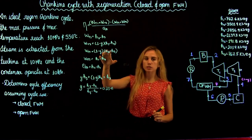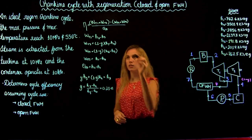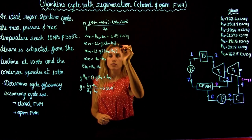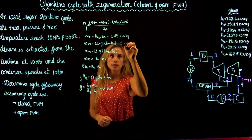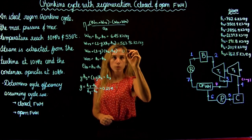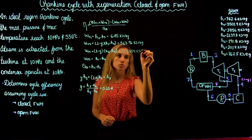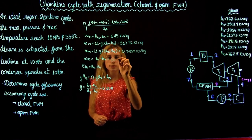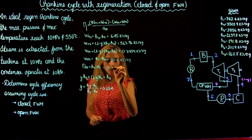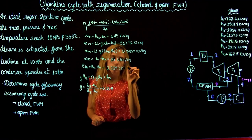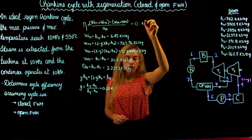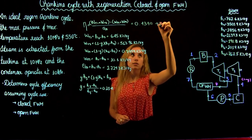Now we're ready to plug in the numbers to find the cycle efficiency. For the first turbine the work is 645 kJ/kg. For the second turbine it is 563.96 kJ/kg. The first pump gives 0.7859 kJ/kg. The second pump gives 10.1 kJ/kg. The heat input in the boiler is 2729.3 kJ/kg. Substituting back into the cycle efficiency equation gives 0.434, or 43.4%.